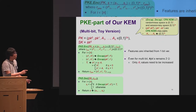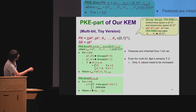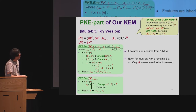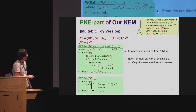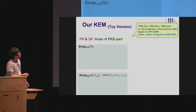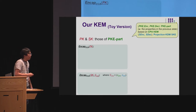The multi-bit version simply increases the number of labels a to n values; otherwise the procedure is essentially the n-times repetition, and all features are inherited from the one-bit version. The nice point is that we don't need to increase the number of public keys and secret keys. Given this PKE part and a projection-KDM-secure SKE, we construct our KEM.